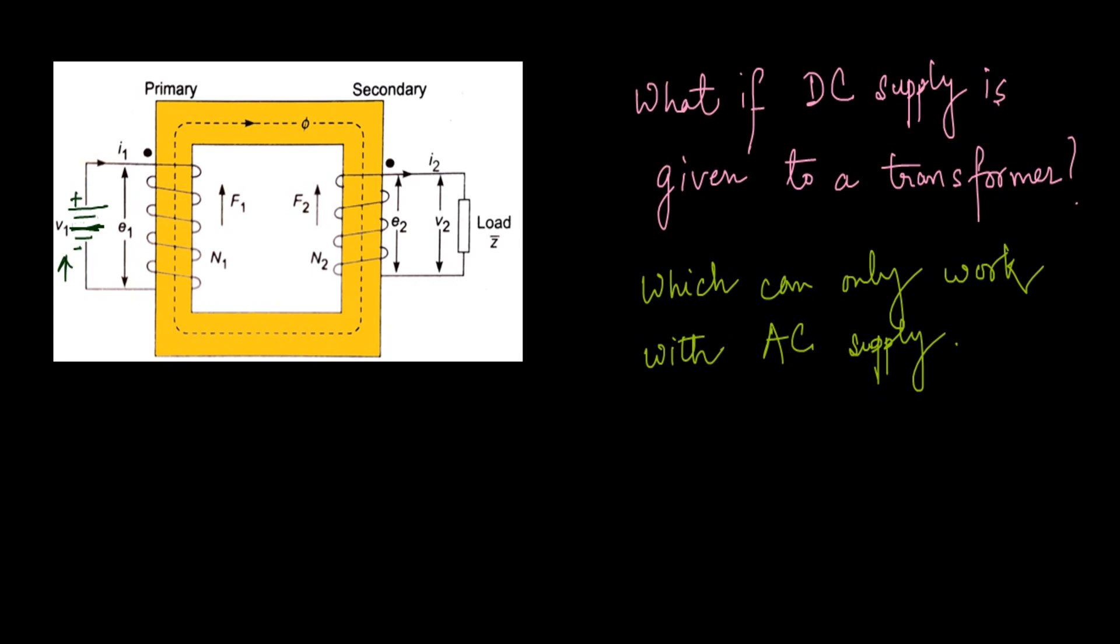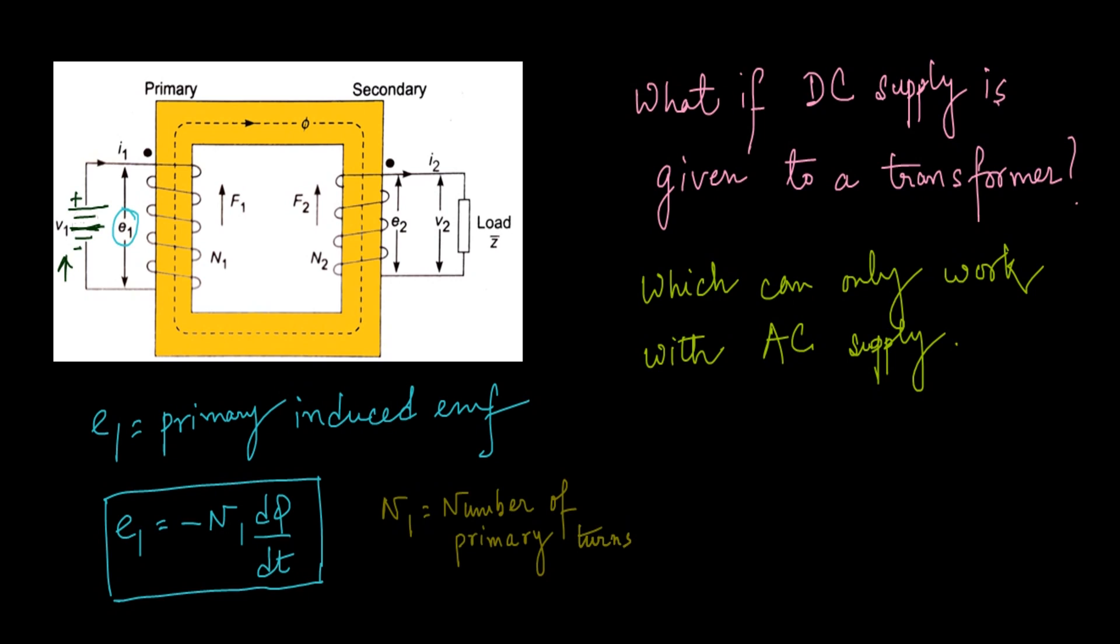First, we need to know how this E1 or primary induced EMF generates in the transformer. From Faraday's law of electromagnetic induction, we know induced EMF or E1 is equal to minus N1 dφ/dt, where N1 is the number of primary turns and φ is the flux generated at the primary winding.